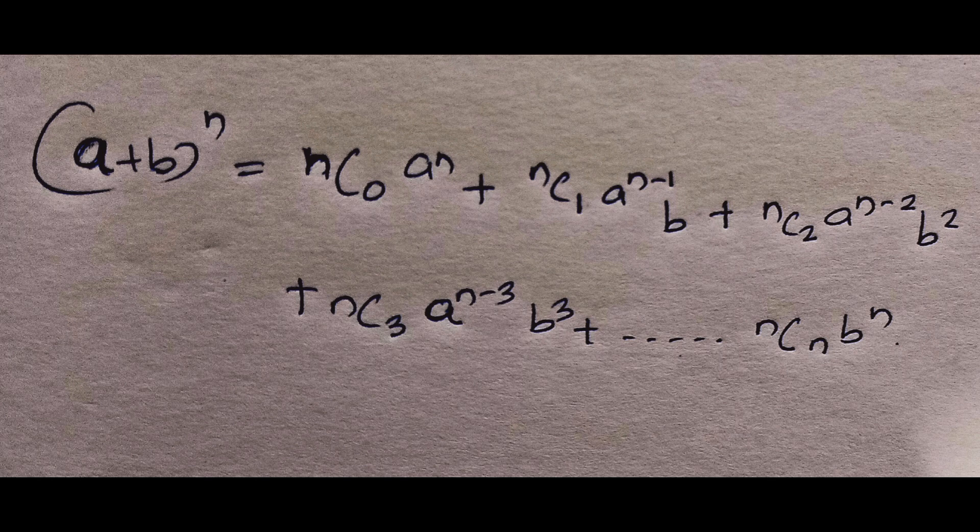The general expansion is: NC0 times A raised to N, plus NC1 times A raised to N minus 1 into B, plus NC2 times A raised to N minus 2 into B squared, plus NC3 times A to the power N minus 3 into B cubed, and so on, till NCN times B to the power N.